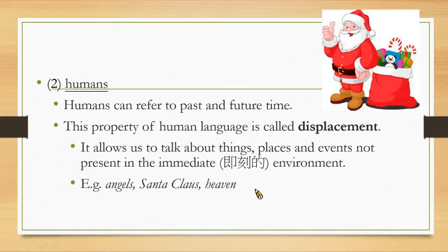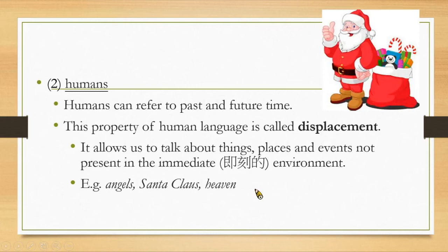Humans can refer to past and future time. This property of human language is called displacement. It allows us to talk about things, places, and events not present in the immediate environment. For example, we can talk about angels, Santa Claus, and heaven — such as 'My grandpa has gone to heaven' or 'Santa Claus gave me a wonderful present on Christmas Day.'